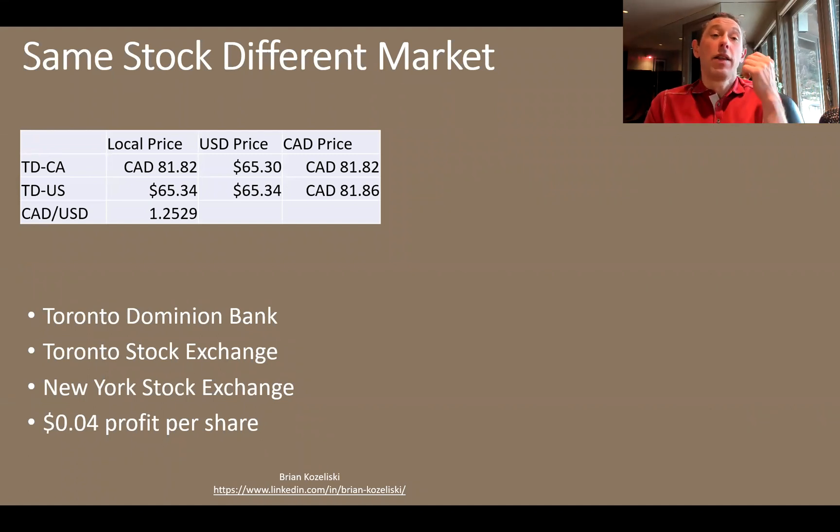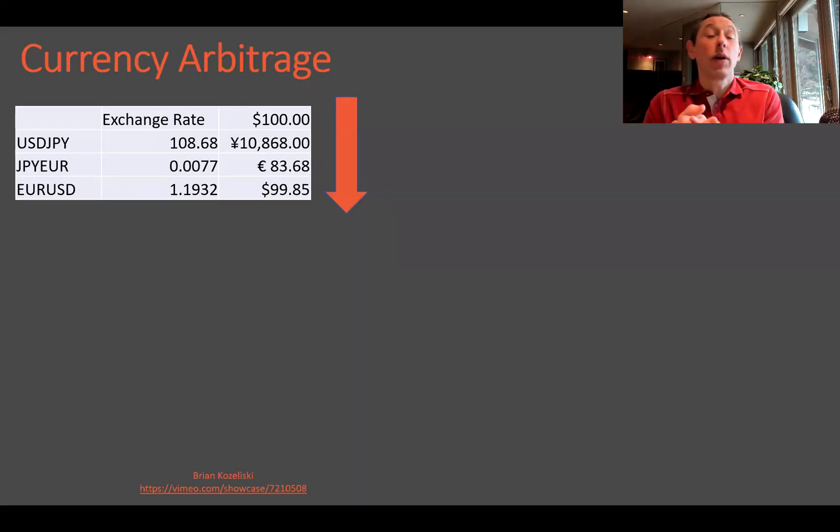That tells us that, hey, the U.S. price in Toronto is lower than it is in the U.S. And the Canadian dollar price in Canada is lower than it is in the U.S. So if you're able to simultaneously make these trades, then you could kind of lock in a profit of $0.04 per share. Feel free to stop that if you need to go through the math, but that's the basic idea there.